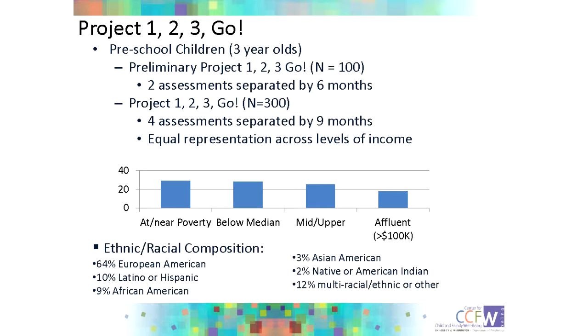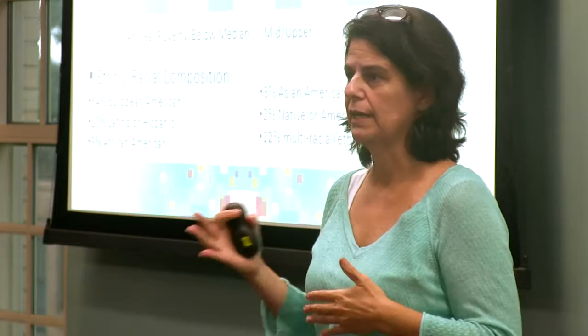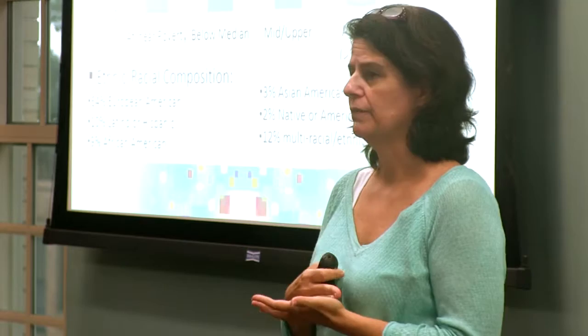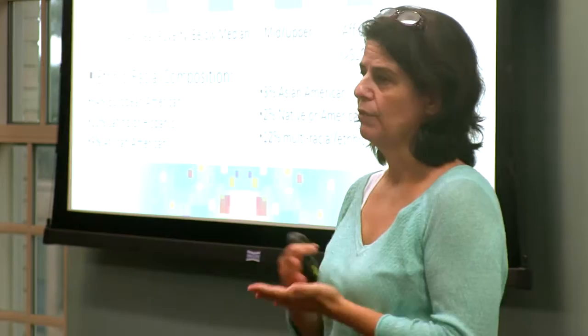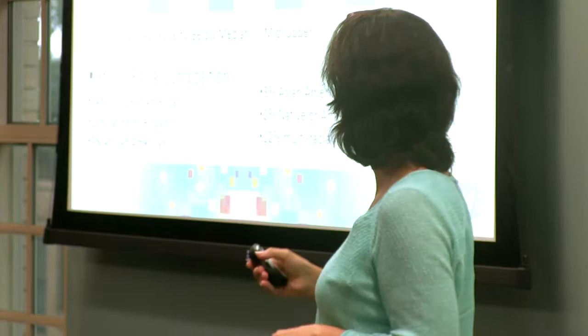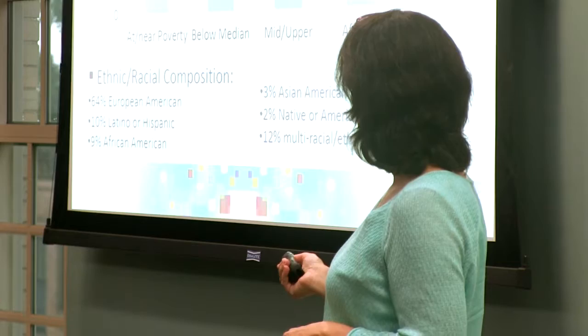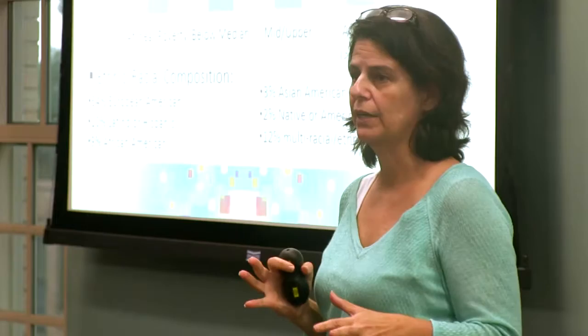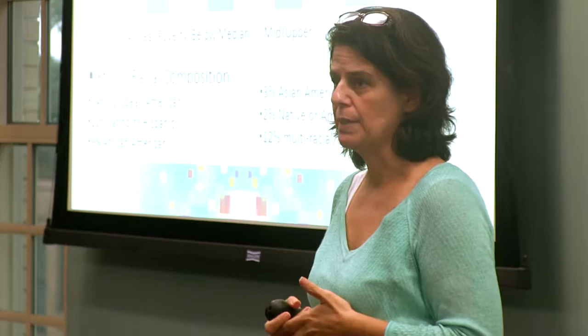The data I'm going to talk about come from a study we called Project 123 GO — actually two closely related projects. The first was a small pilot with a hundred three-year-olds followed for six months, and then we collected a bigger dataset of 300 kids assessed once every nine months for two and a half years, starting at age three and ending at five and a half. We were explicitly testing the relation of income to effortful control as an aspect of self-regulation, so it was important to have a full range of income with good representation at all levels. The ethnic and racial composition pretty much reflects the Seattle-King County area.